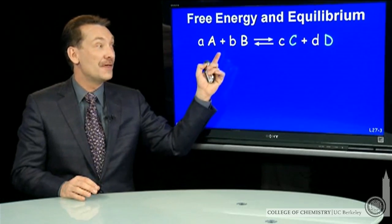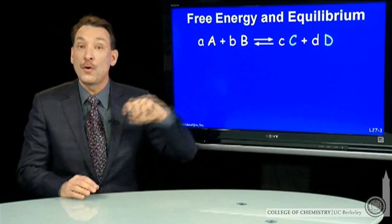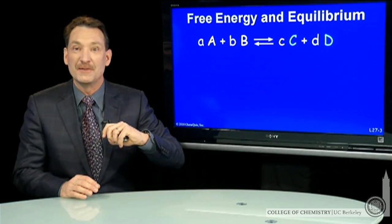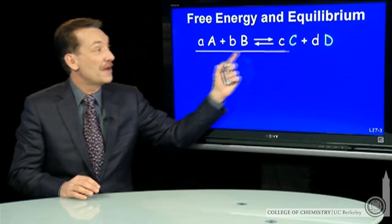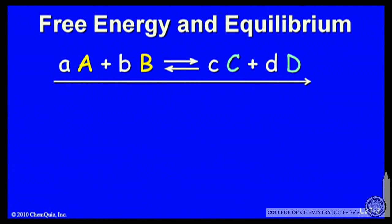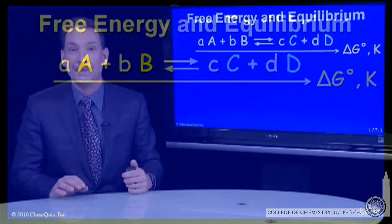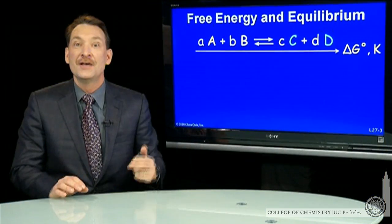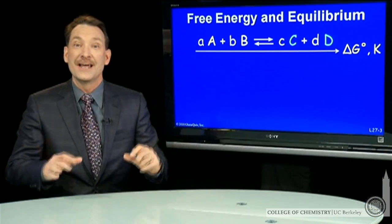At equilibrium, the products or the reactants may be favored. If the products are favored, that implies a standard state free energy difference that's less than 0 — a negative standard state free energy — and an equilibrium constant that's greater than 1. So those two things are correlated.